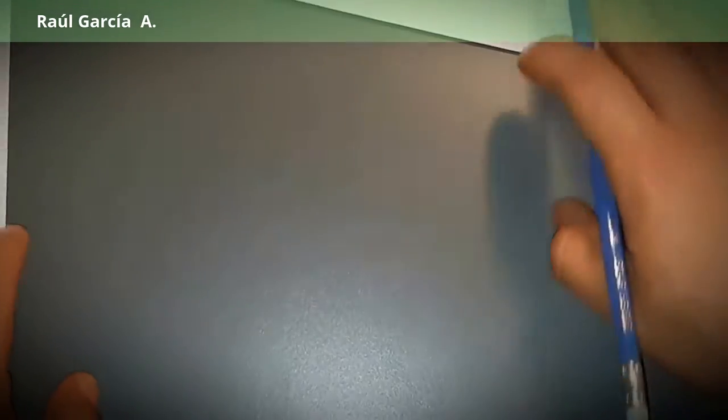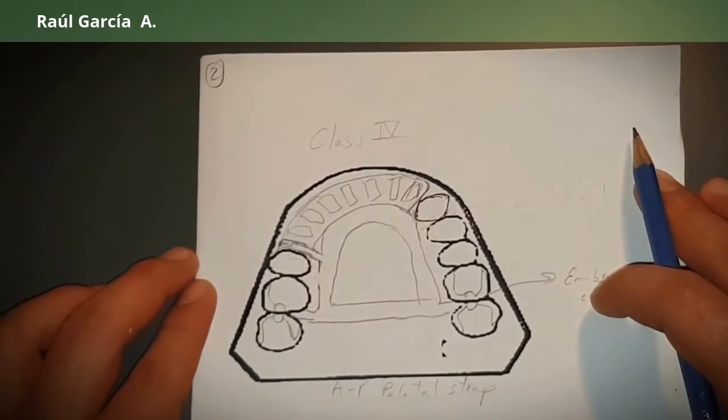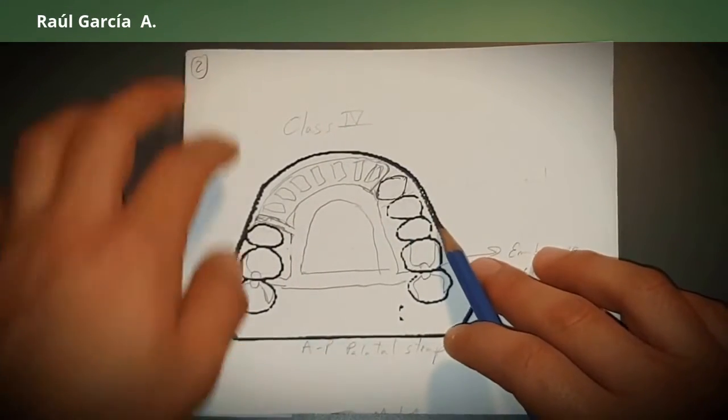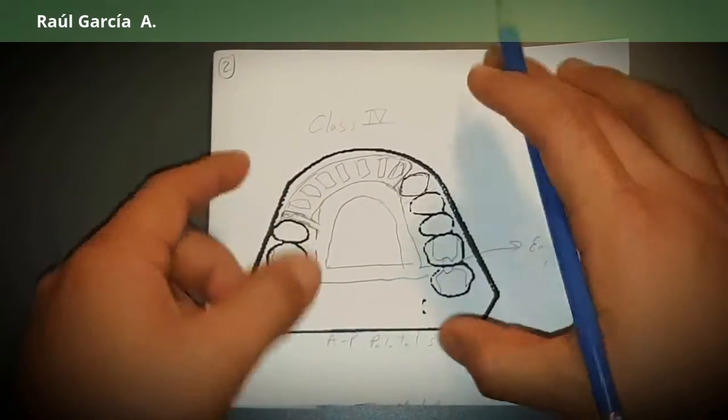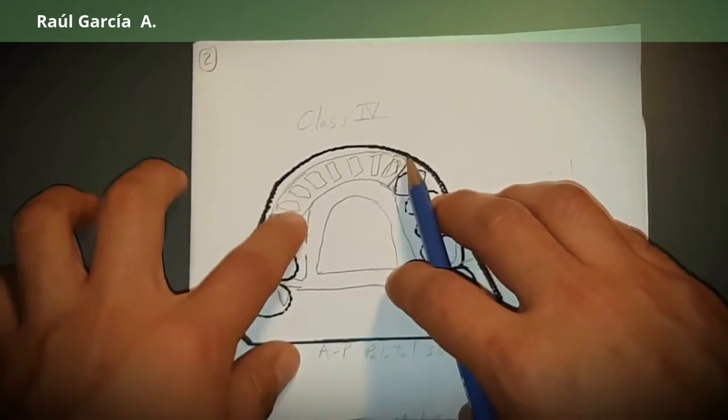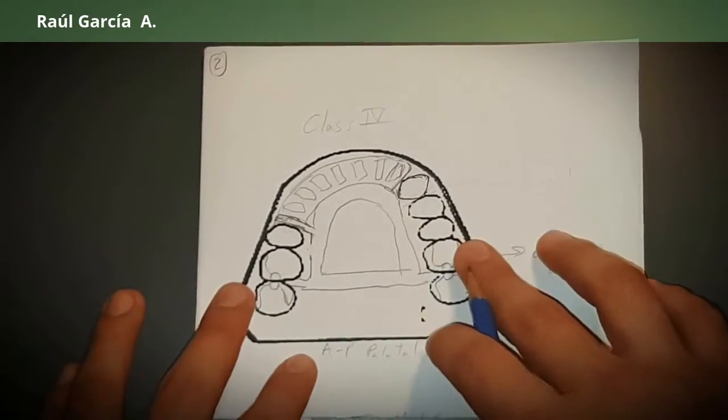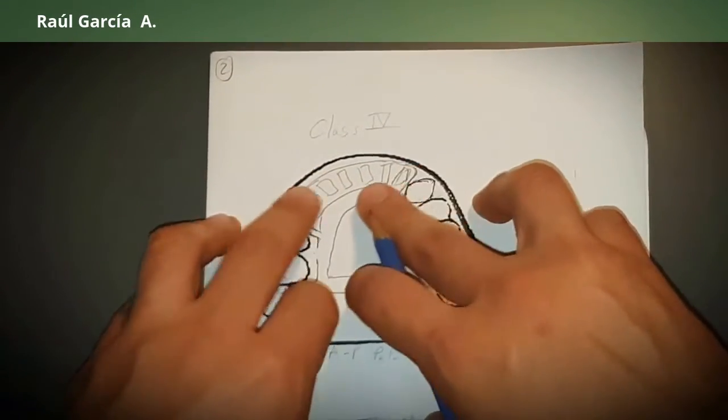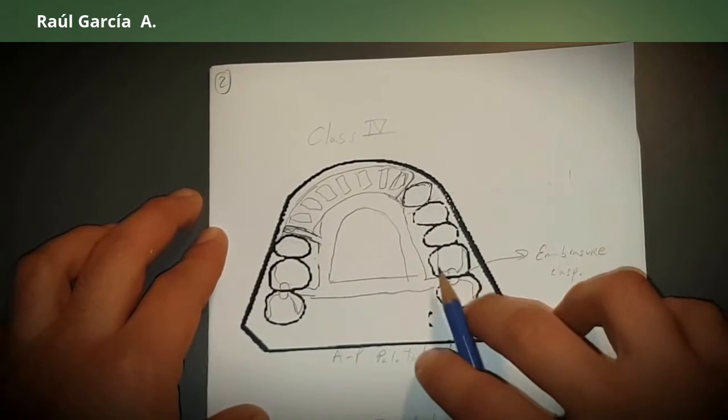What happens when you start losing the canines? When you start losing your canines on one side, this Class 4 turns into an anterior extension RPD. In other words, this is becoming a saddle area that is going to change our mechanics. We have to treat it as this portion would be like a Class 1 or a Class 2 saddle area.